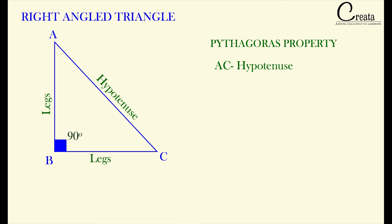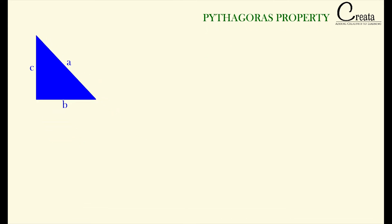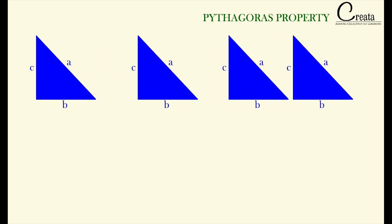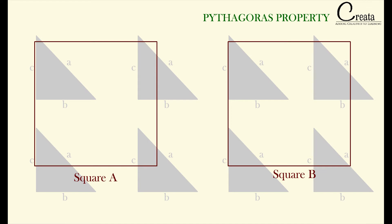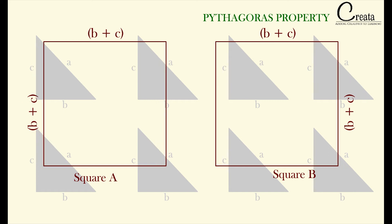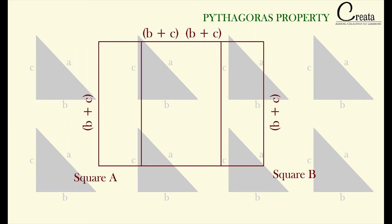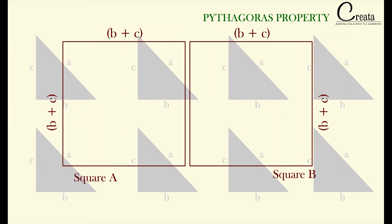Let's give the name to the sides as A, B, and C. Let's make eight identical copies of the right angle triangle ABC. Now we will draw two identical squares with a side of length B plus C. Both squares are identical, having the same side length B plus C.